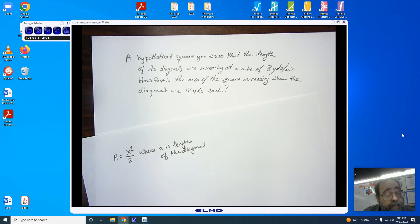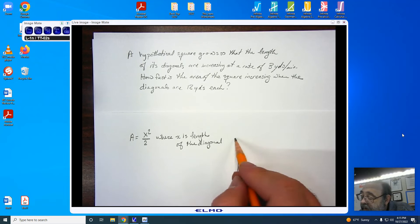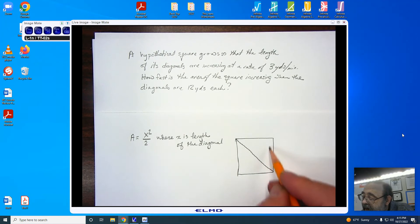that the area is going to be x squared divided by 2, where x is the length of the diagonal. All righty, so here we go. We're going to be using our formula.